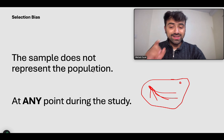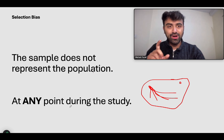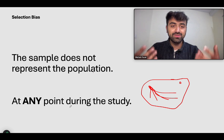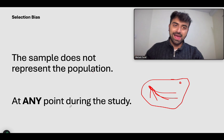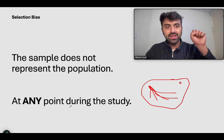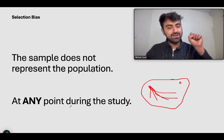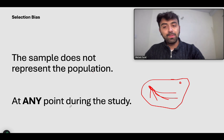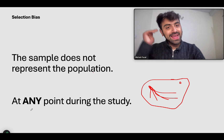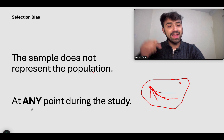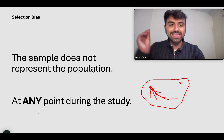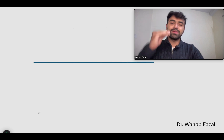Selection bias is when that sample does not represent the population, and this is not at any specific point. I had a misconception as a student that selection bias happens only when you're selecting your sample, but that's not true. This can happen at any point during the study, and that's what we're going to talk about when we discuss selection bias and its subtypes.